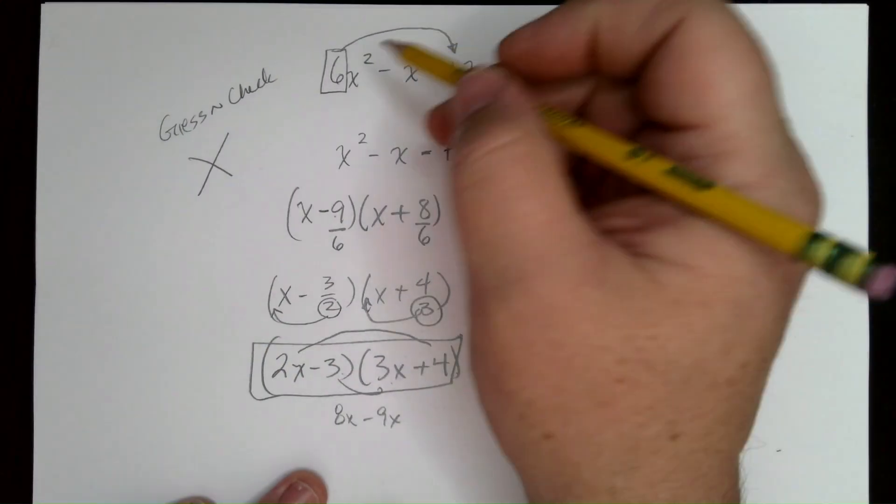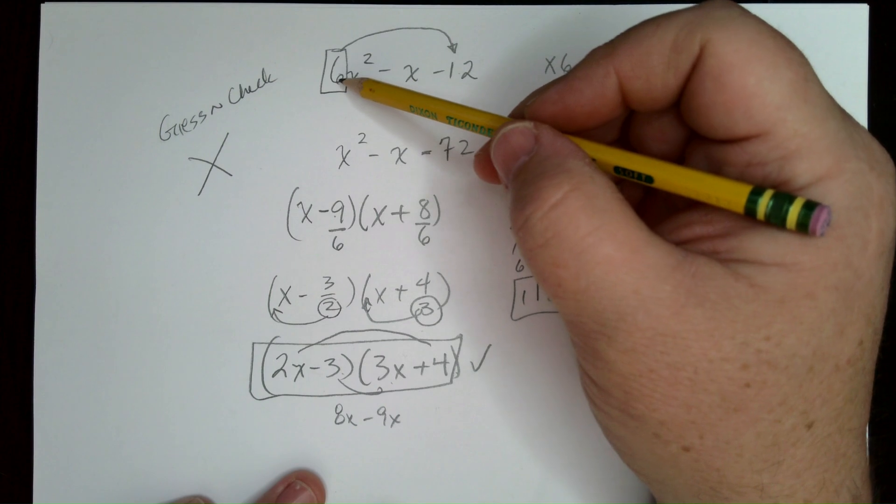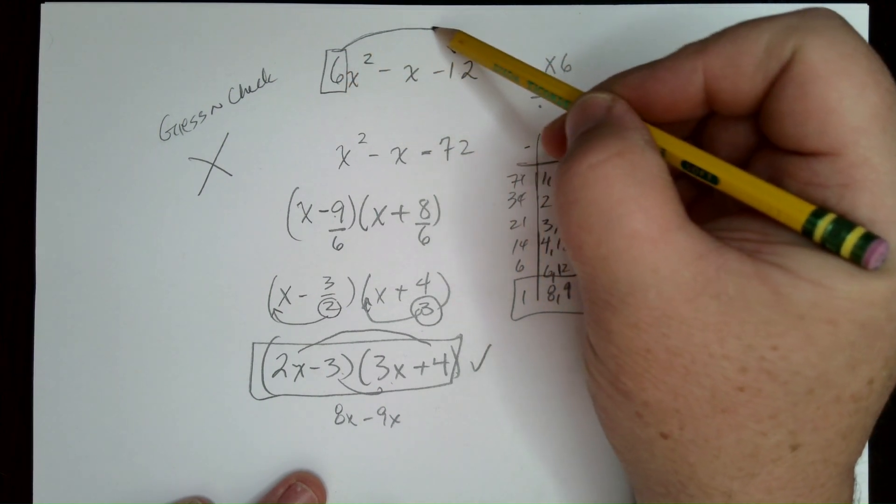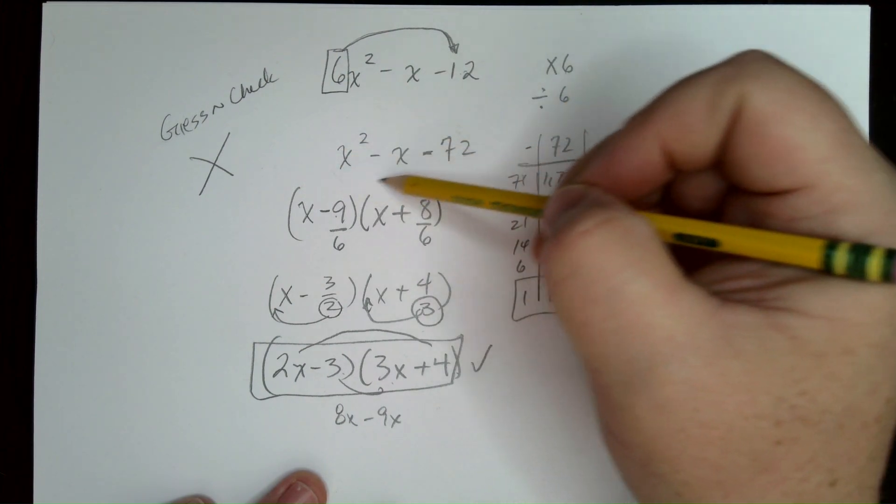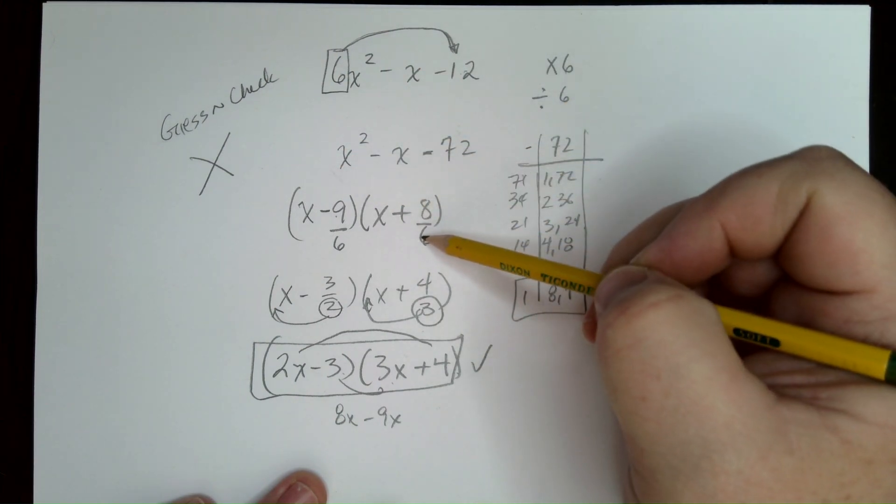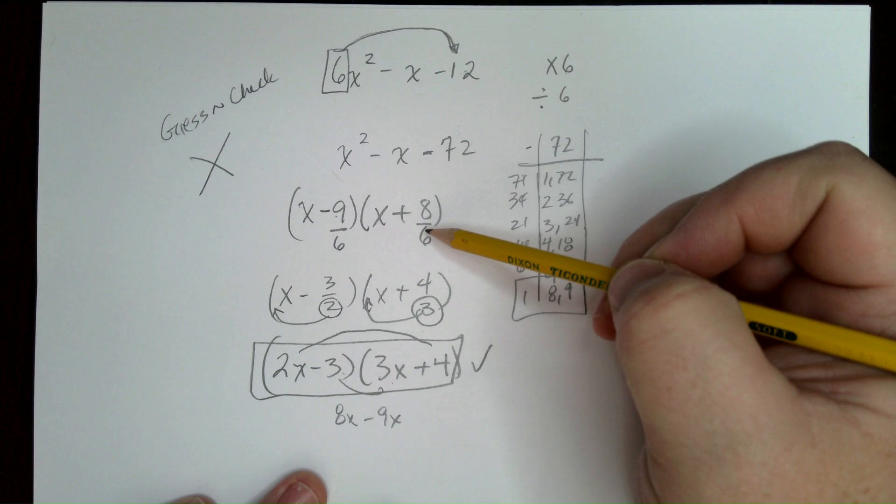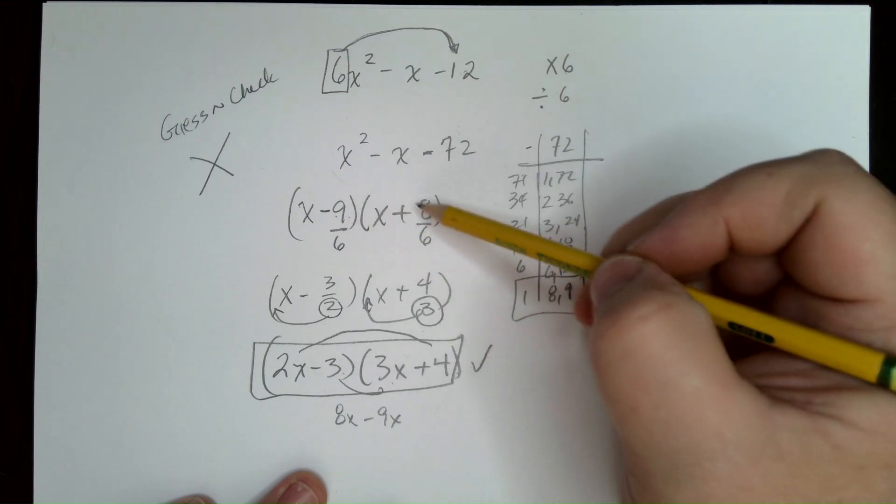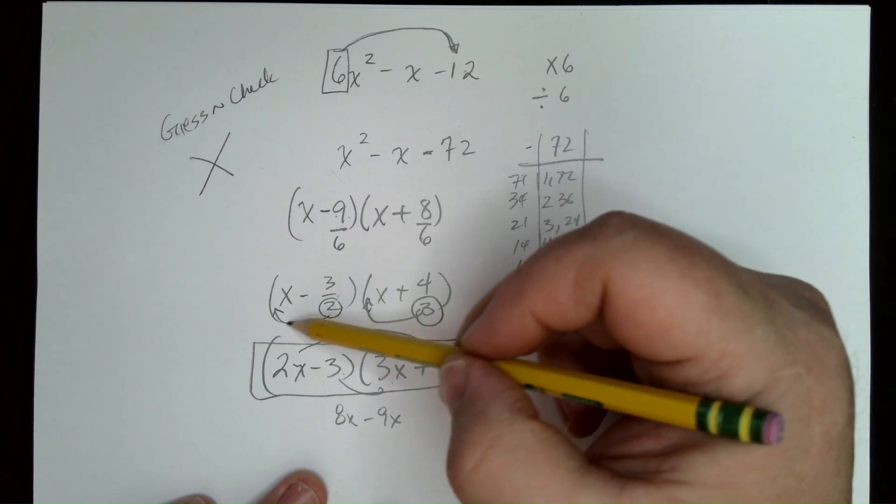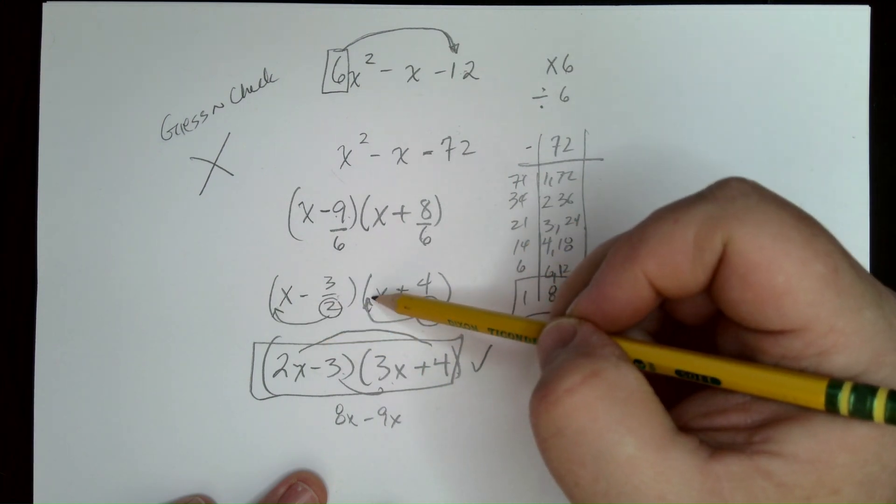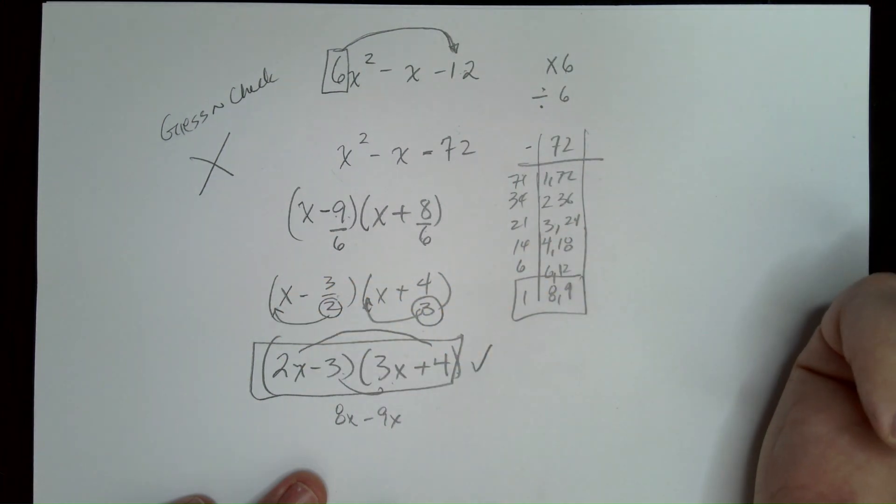So, again, just to be clear, here's what we did. We took that 6 and we multiplied it by the constant and got 72. Then we factored this thing. When we had that factored, we went ahead and took that 6 that we had multiplied at the beginning and divided these two numbers at the end by that 6, reduced, and then moved those denominators to make them coefficients for the x. Boom. Done. Pretty cool.